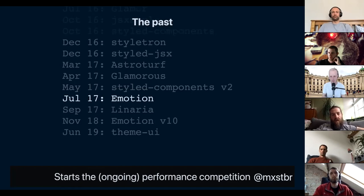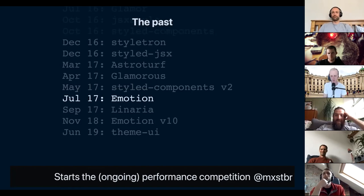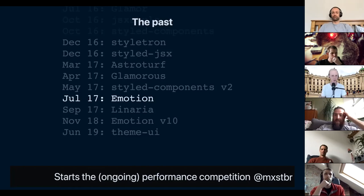In July of 2017, we got Emotion, which kicked off a still-ongoing performance competition. Emotion came on the scene claiming to be 50 times faster than every other CSS-in-JS library. All the other libraries went and figured out why it was faster, then worked on making themselves faster too. Nowadays, basically all CSS-in-JS libraries are the same speed — they're all super fast — and the reason is that Emotion kicked off that competition. It's an amazing library and I absolutely love those guys.